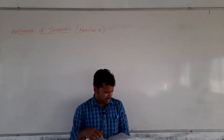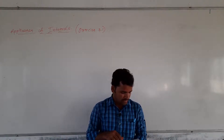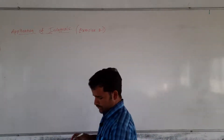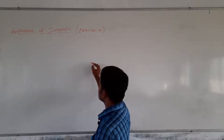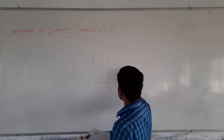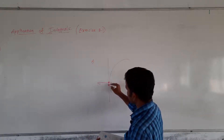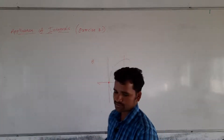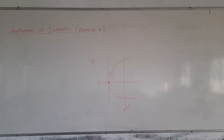In exercise 8.1, after problem number 10 in the last video, problem number 11 is: find the area of the region bounded by y² = 4x and the line x = 3. This one is very simple. The parabola has its vertex at the origin and the line is x = 3. You need to integrate from x = 0 to x = 3. That problem is left to you.